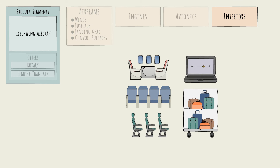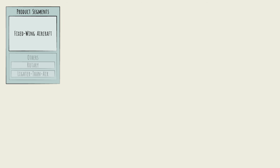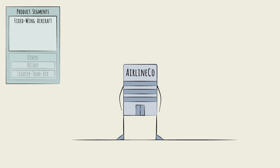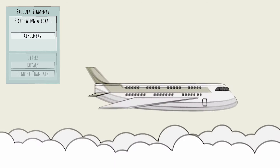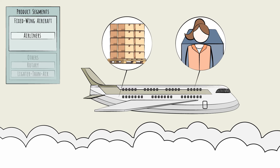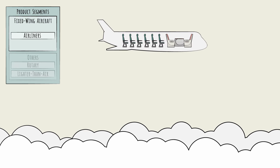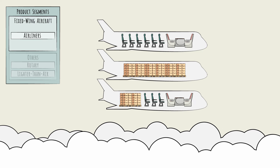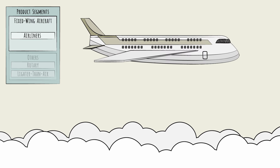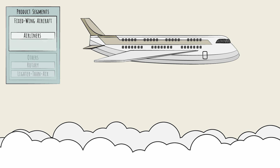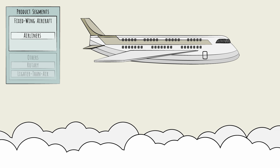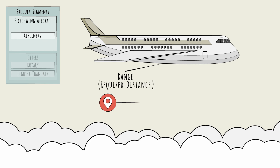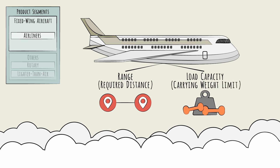Let's turn now to the differences — the types of fixed-wing aircraft. The largest segment, and our focus, is commercial-sized aircraft. These are flown by airlines, and are called airliners accordingly. Airliners can carry passengers, cargo, or both, but the planes themselves are largely the same in any case — only the interiors will vary. Airliners are therefore better segmented not by what they carry, but by what needs they fulfill. This is called the mission profile, and is a function of range — the required distance — and load capacity, the carrying weight limit.